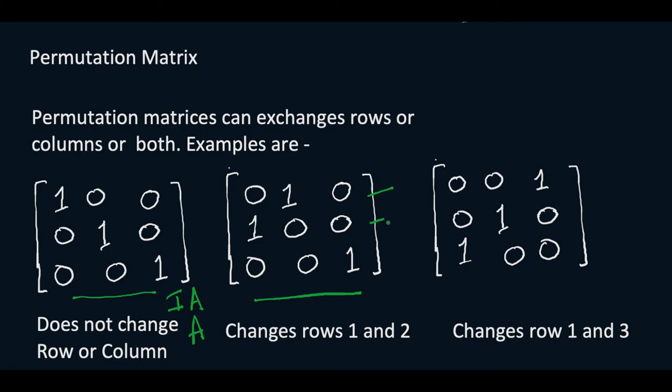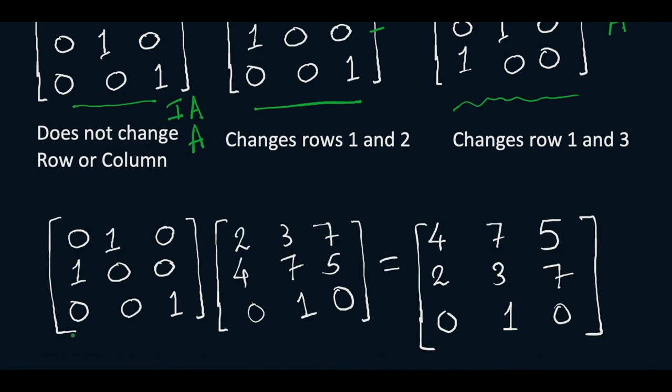When you multiply identity matrix with any matrix you get the same matrix, but when you multiply this matrix it will change rows 1 and 2, and similarly if you multiply this matrix with any other matrix like A, the rows 1 and 3 of A will get changed. Now we will see an example.